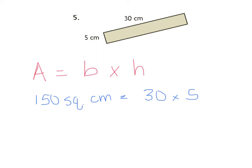Okay, so this is what you should have done. You should have done 30 times 5 equals 150 squared centimeters. Because 3 times 5 is 15 and then you bring down your 0 to give you 150. If you got that, awesome job.